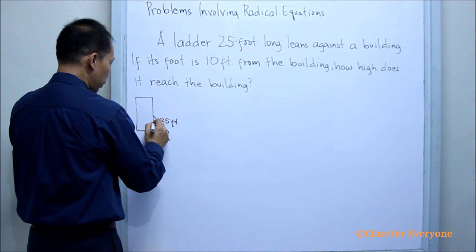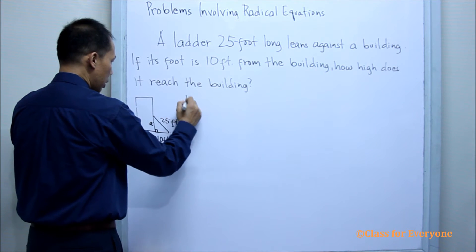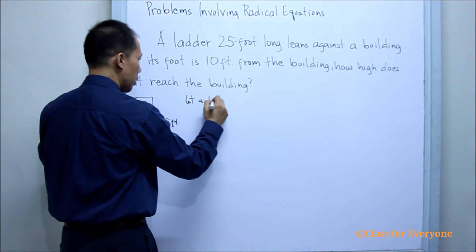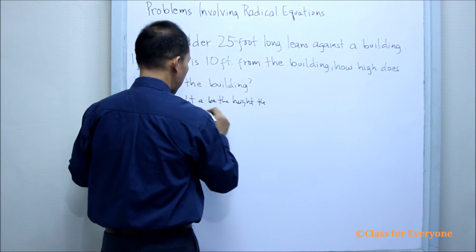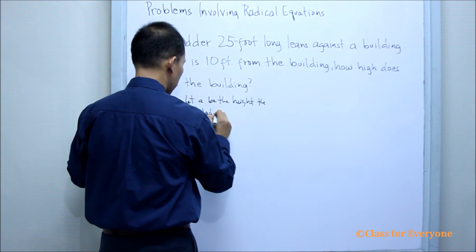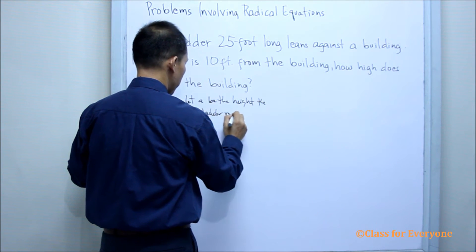The ladder reaches the building. So, this is our unknown. So, let this be A. Let A be the height the ladder reaches the building.